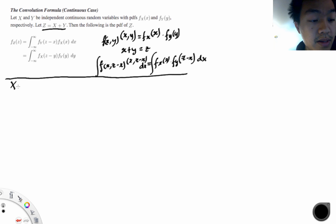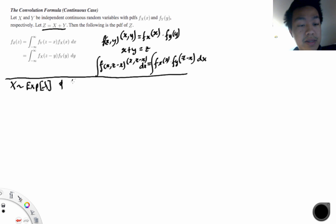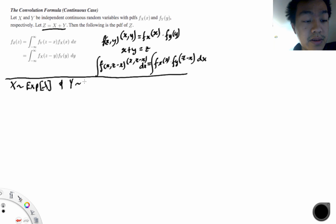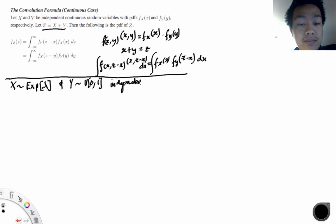Our first example: x is distributed exponentially with parameter lambda, and y is distributed uniform on the interval (0,1). They are independent.